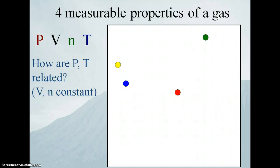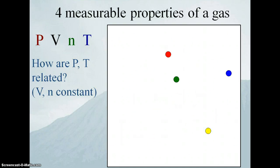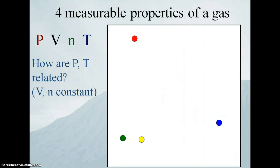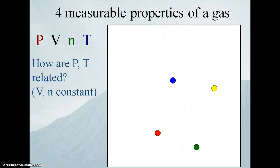Here I have my little sample of gas with four gas molecules bouncing around. Remember that pressure is a measure of the number of collisions per unit time into the wall — that's a simple way of thinking about pressure. The more collisions we have per unit time, the greater the gas pressure. So now we're going to increase the temperature and see what happens.